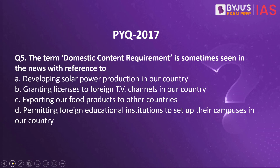Now let us take up a previous year question from the Prelims Paper 2017. The term 'domestic content requirement' is sometimes seen in the news with reference to: Option A - developing solar power production in our country; Option B - granting licenses to foreign TV channels in our country; Option C - exporting our food products to other countries; Option D - permitting foreign educational institutions to set up their campuses in our country.